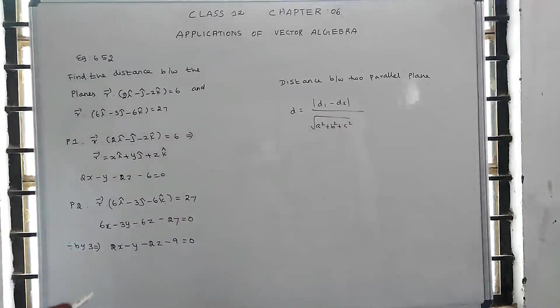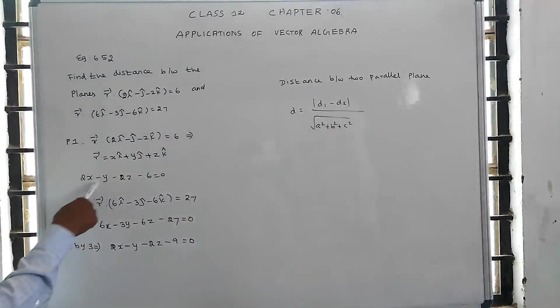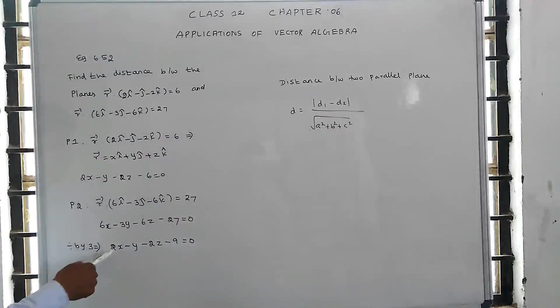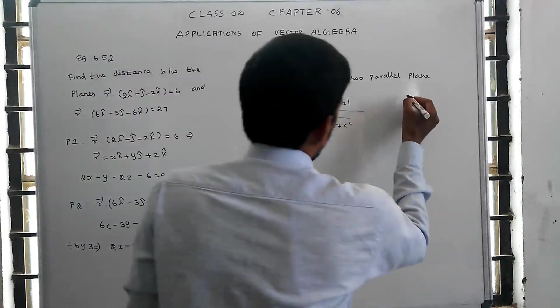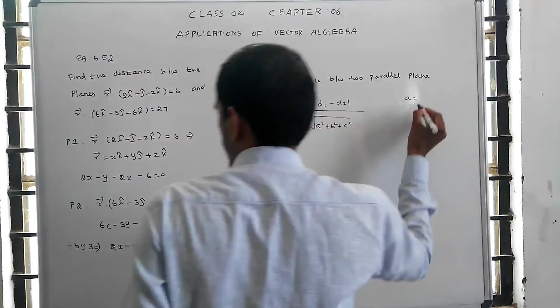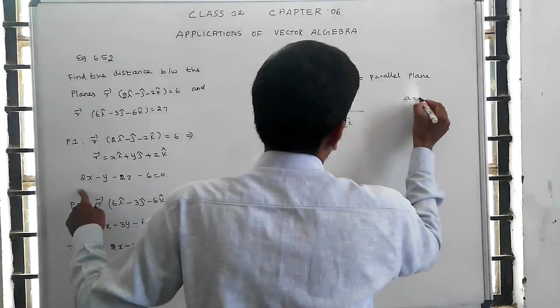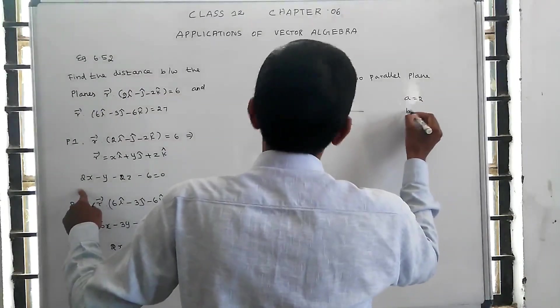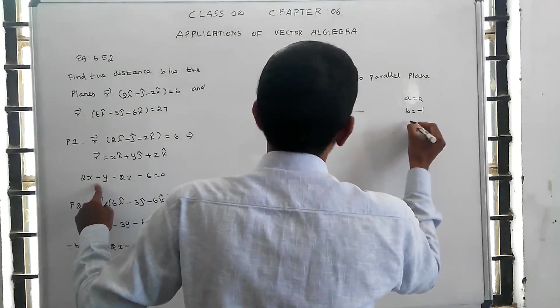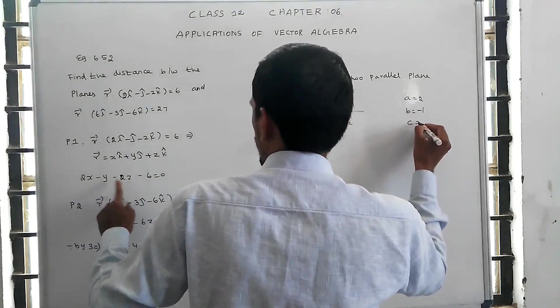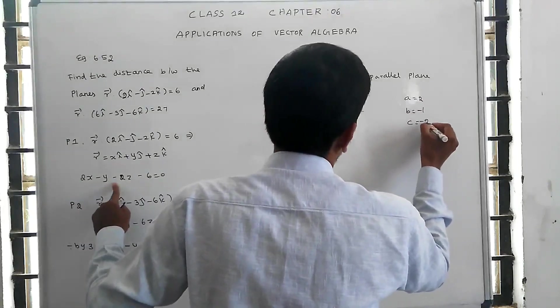Here, A, B, C are the coefficients of x, y, z respectively. The coefficient A equals 2, and the coefficient B equals −2. These coefficients are the same for both planes.